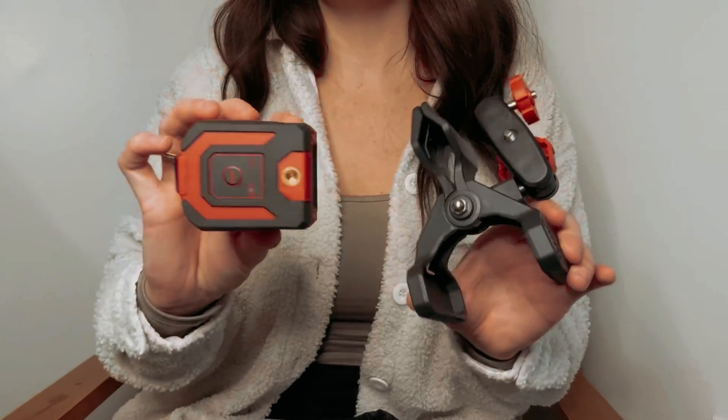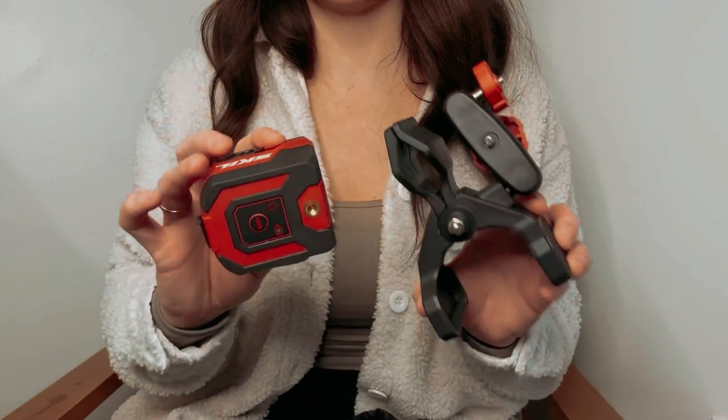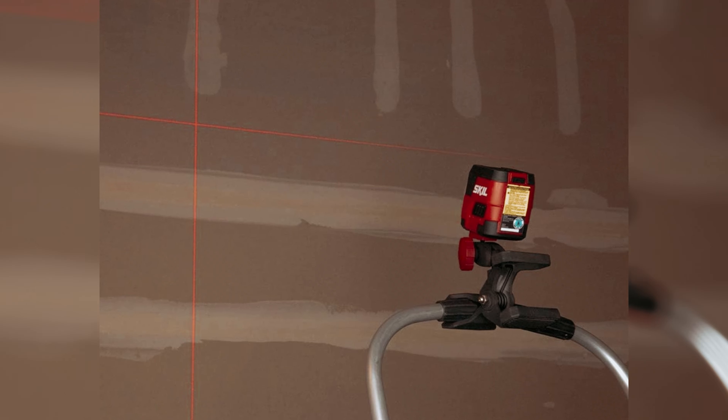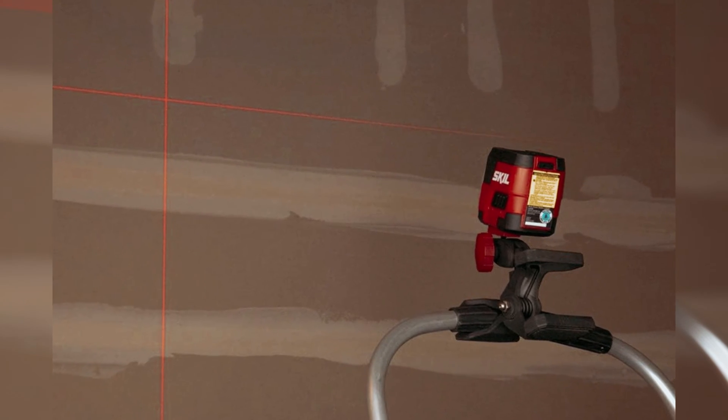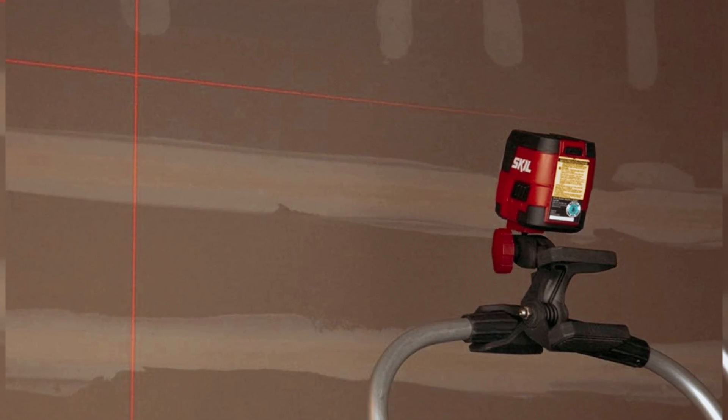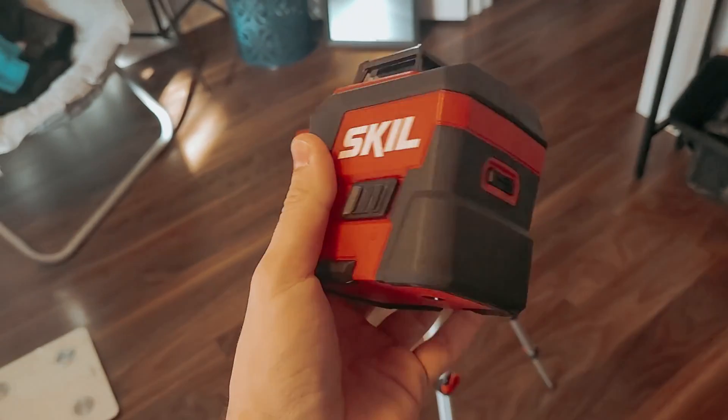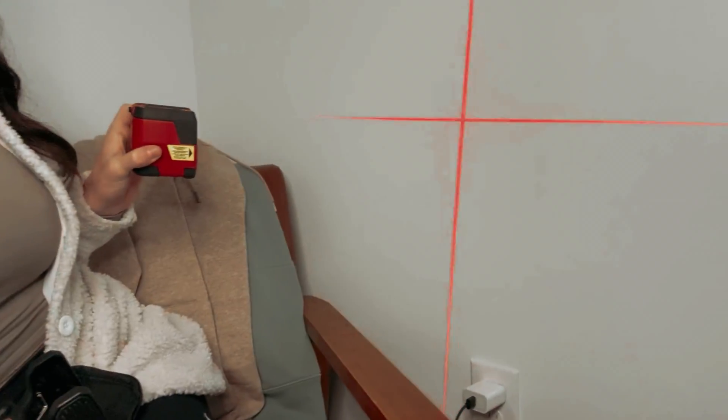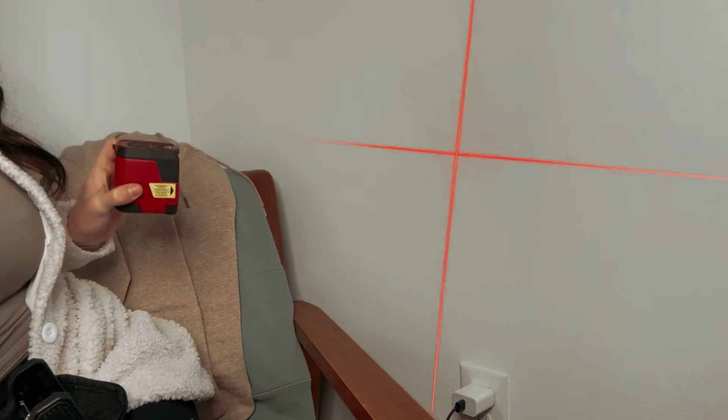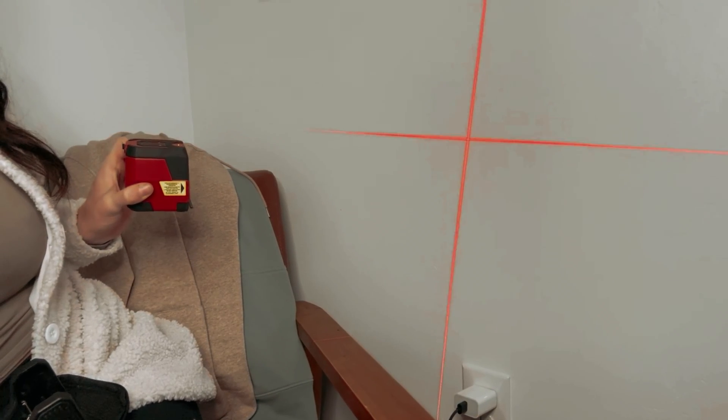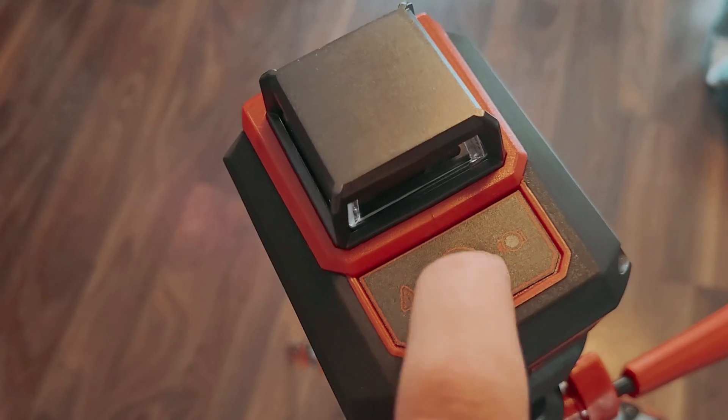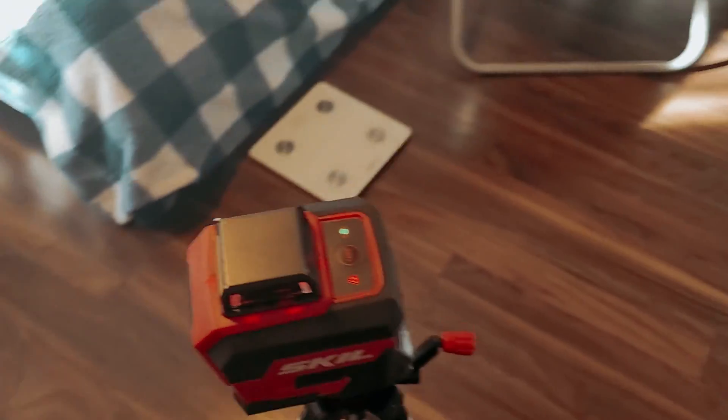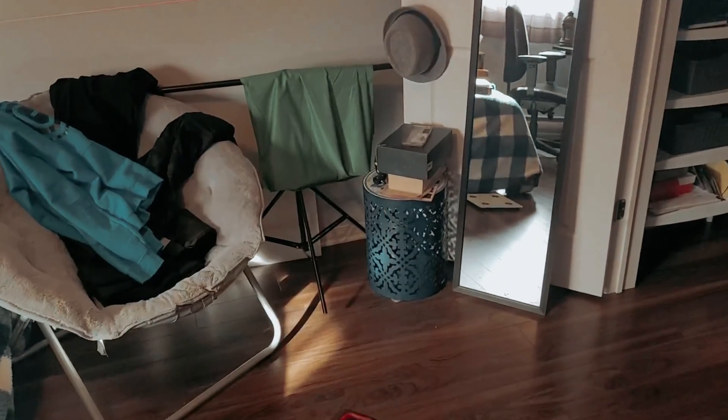Additionally, the integrated rechargeable lithium-ion battery with a micro-USB charging port provides hassle-free charging, ensuring that the tool is always ready for use. The inclusion of a clamp adds to the tool's versatility, allowing for easy and secure placement on various surfaces. Whether you're installing cabinets, trim, or molding, this laser level will streamline the process and help you achieve professional results.